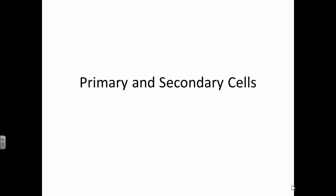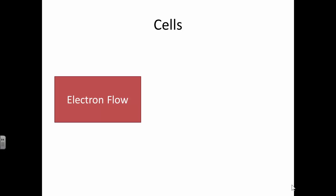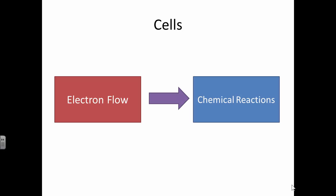Now we need to look at primary and secondary cells. You know that in chemistry if you have an electron flow you can produce chemical reactions. Starting with an electron flow you can get that to happen.